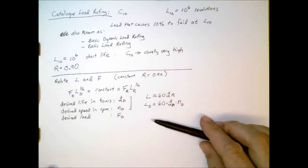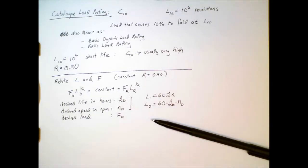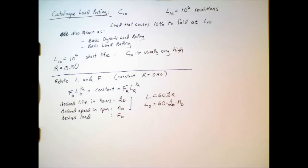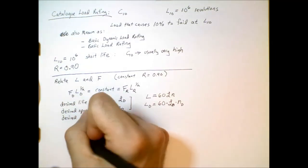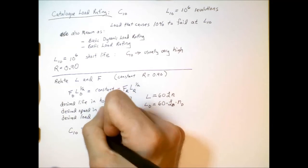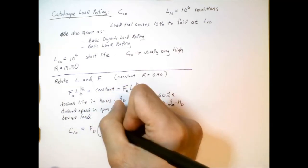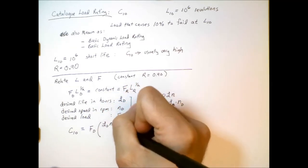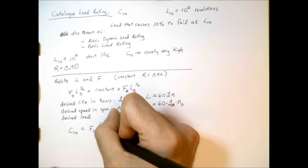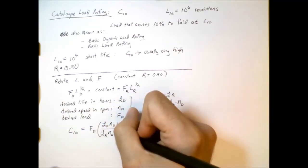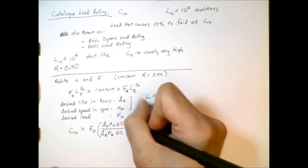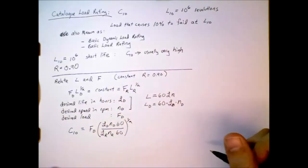So, in other words, we have all of this design data, all of these design requirements. We need to combine them and translate them into the catalog load rating so that we can go into the catalog and choose a bearing that's going to meet our requirements. So, if we do that, then the C10 rating, that's equal to the design load times L sub D times N sub D times 60 divided by L sub R times N sub R times 60, all to the power of 1 over A.